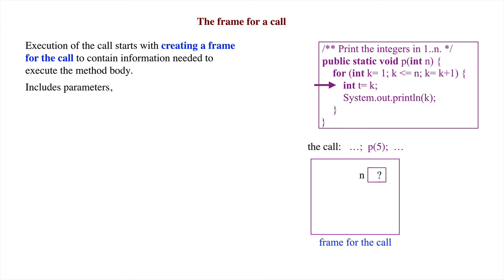This information includes the parameters of the method, in this case n, the local variables declared in the method body, k and t,